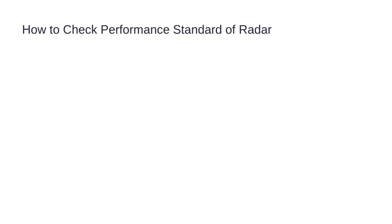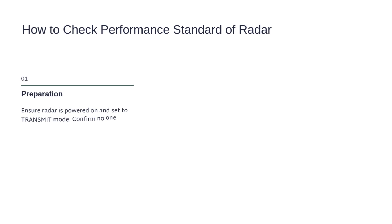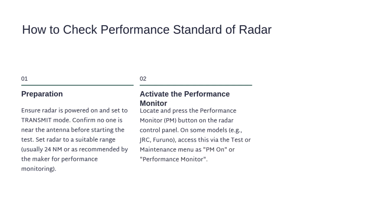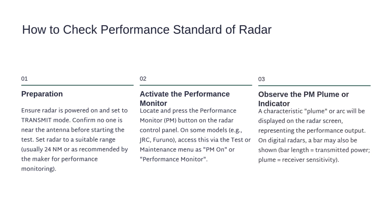Let's begin with something every officer of the watch must know — checking the radar's performance standard. Step 1: Preparation. Make sure the radar is powered on and set to transmit mode. Confirm no one is near the antenna before you start. Select a suitable range, usually 24 nautical miles, unless the radar maker recommends otherwise. Step 2: Activate the performance monitor. Find the performance monitor button on the radar control panel. On some systems like JRC or Furuno, it may appear in the test or maintenance menu as PM on. Step 3: Observe the output. When activated, a plume or arc will appear on the radar screen. On digital radars, you may also see a bar. The bar length shows transmitted power, and the plume represents receiver sensitivity.